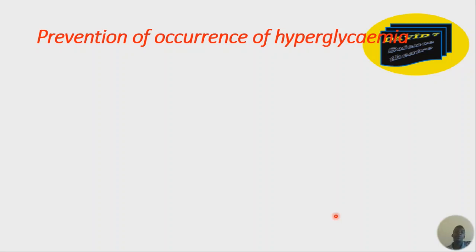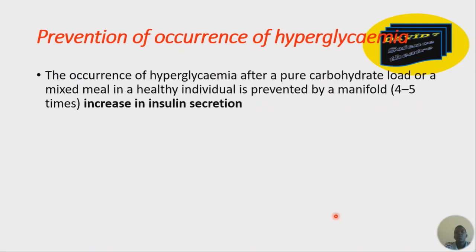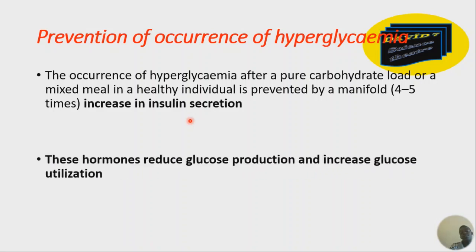How do you prevent the occurrence of hyperglycemia? Sometimes we have higher levels of glucose in blood. The occurrence of hyperglycemia after a pure carbohydrate load or a mixed meal in a healthy individual is prevented by a manifold — four to five times — increase in insulin secretion. These hormones reduce glucose production and increase glucose utilization. Insulin increases glucose utilization and reduces production through gluconeogenesis, glycogenolysis, and other pathways.